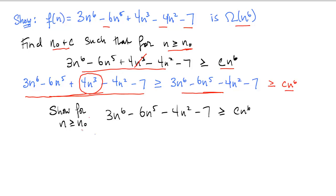We need to pick constants n₀ and c and show that 3n⁶ − 6n⁵ − 4n² − 7 ≥ c·n⁶. Intuitively, f is Ω(n⁶) because for large n the leading n⁶ term dominates the rest. The n⁶ term has at least one more factor of n than any lower-order term, making it much larger for large n regardless of the constant coefficients.